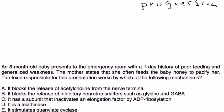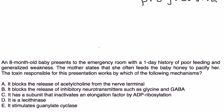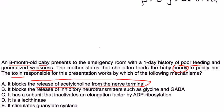So let's take a look at some vignettes. An eight-month-old baby presents to the ER with a one-day history of poor feeding and generalized weakness. The mother states that she often feeds the baby honey to pacify her. The toxin responsible for this presentation works by which of the following mechanisms? Well, if you rewind back in this video, you'll see me trying to explain that this toxin blocks the release of acetylcholine from the nerve terminal so that it can't interact properly with the muscle cells, and that eventually causes muscle paralysis.